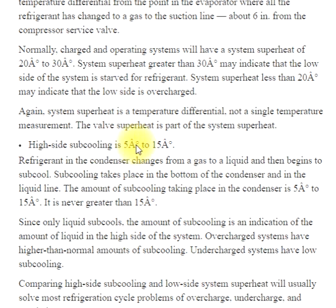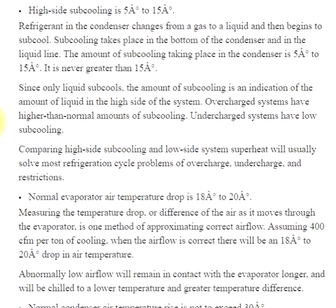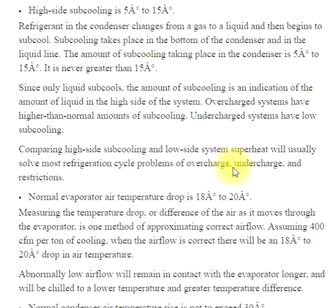High side subcooling is 5° to 15°. Refrigerant in the condenser changes from a gas to a liquid and then begins to subcool. Subcooling takes place in the bottom of the condenser and in the liquid line — the amount is 5° to 15°, never greater than 15° since only liquid subcools. The amount of subcooling indicates the amount of liquid in the high side. Overcharged systems have higher than normal subcooling; undercharged systems have low subcooling. Comparing high side subcooling and low side system superheat will usually solve most refrigeration cycle problems of overcharge, undercharge, and restrictions.